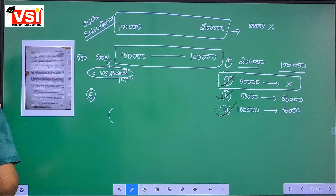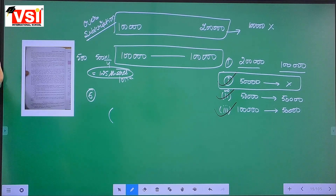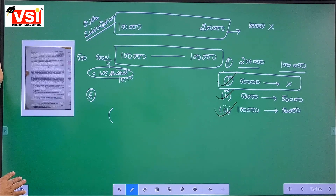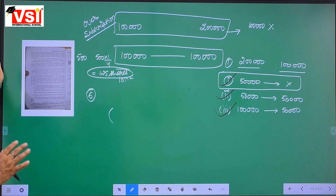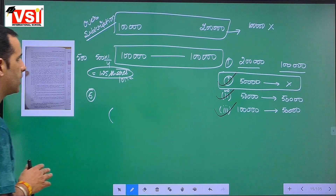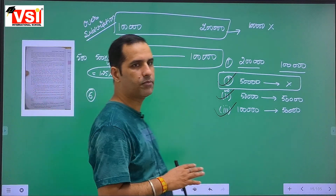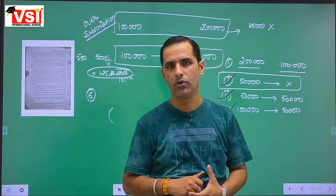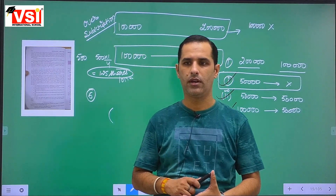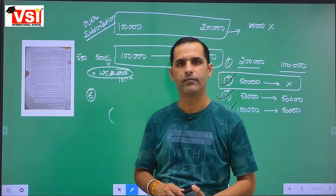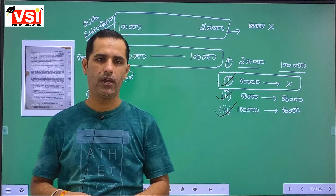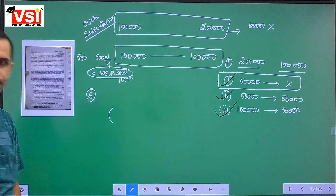So I have covered three steps: one — issue prospectus, two — receive applications, three — make allotment. The remaining step — to make calls — and the next topic of preliminary expenses we will cover in tomorrow's class. Read these details carefully, and if there are any doubts raise them in tomorrow's class. That's all for today — have a nice day, goodbye.